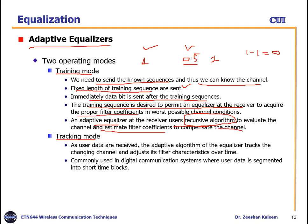In tracking mode, as user data is received, the adaptive algorithm continuously tracks the changing channel and adjusts its filter characteristics over time. This is called the adaptive algorithm.